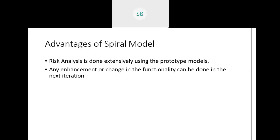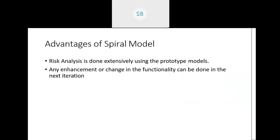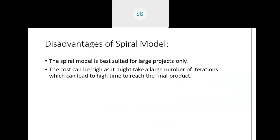The advantage of the spiral model is that risk analysis is taken into concern — which other models we have studied so far did not do. Any enhancement can be made in the next iteration, so if modification is needed by the customer, it can be added in the next stage. The disadvantage is that when going for iterations, the cost increases because the project is repeated. Also, this kind of model is basically followed for large projects, not for small projects.